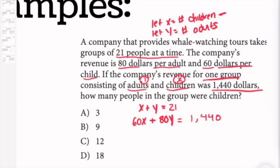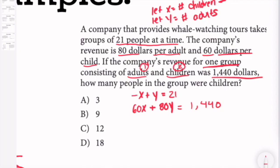Now I have a system of equations. I'll multiply both sides of the first equation by 80. Multiplying by 80, I get 80x + 80y equals 21 times 80, which equals 1,680.